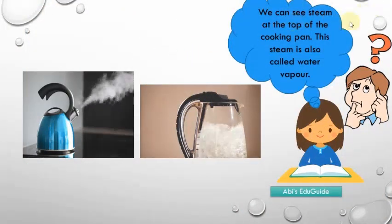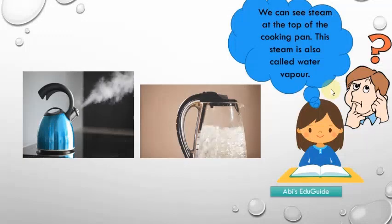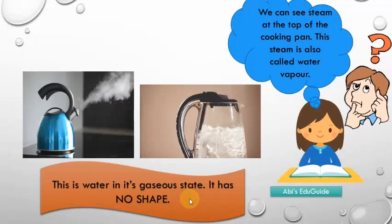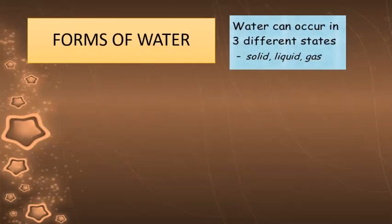When your mom is cooking food, you can see steam at the top of the cooking pan. This steam is also called water vapor. This is water in its gaseous state. It has no shape.